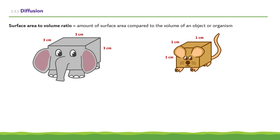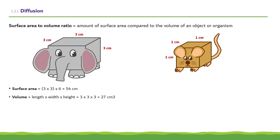We'll first work out the surface area to volume ratio of the elephant. Each side is 3cm long and 3cm wide, so we multiply these together. As there are 6 sides to a cube, we multiply by 6, giving a total surface area of 54cm². Using the formula for volume — length times width times height — we get 3 × 3 × 3, which is 27cm³. Putting these into a ratio gives 54:27, which simplifies by dividing each side by 27 to give a ratio of 2:1.